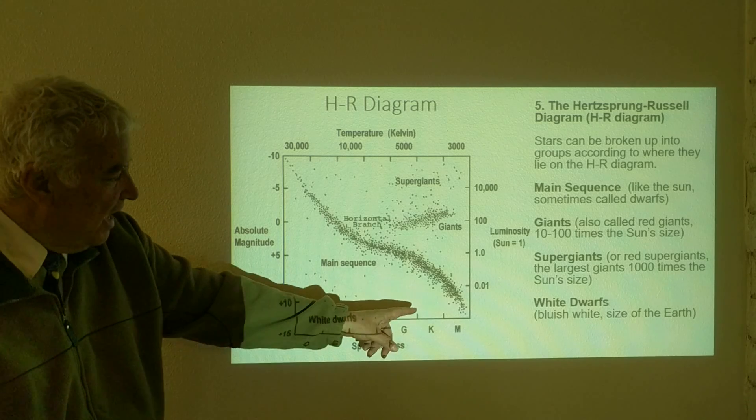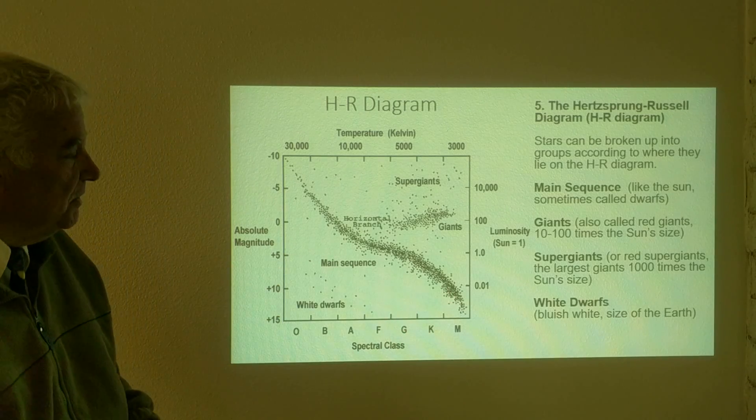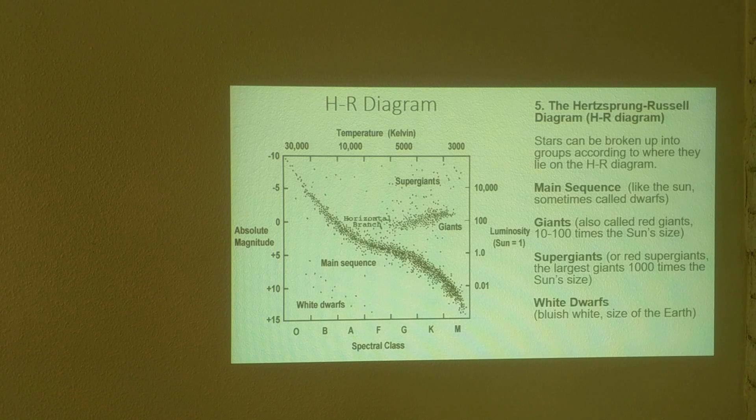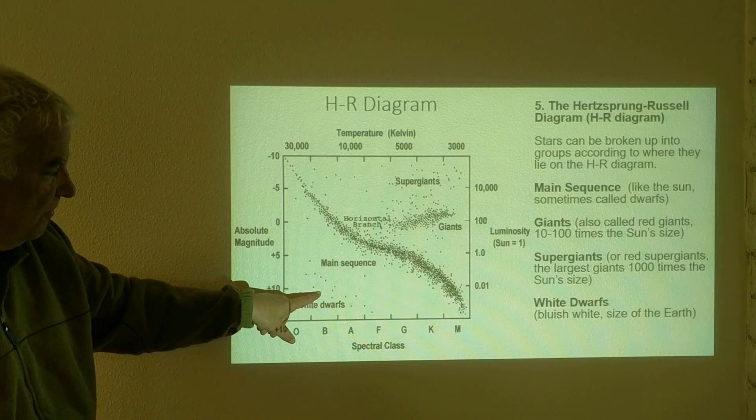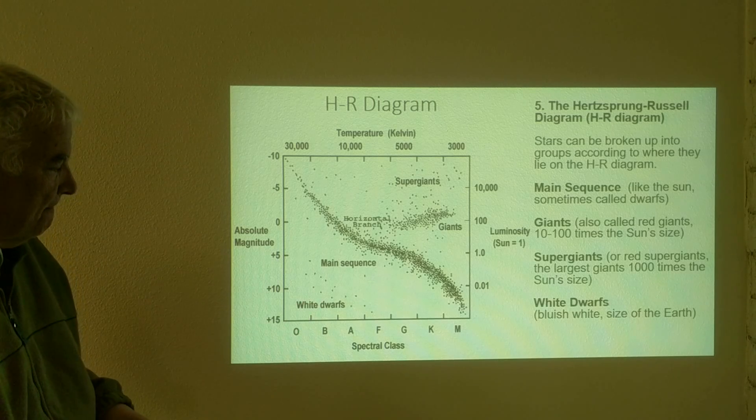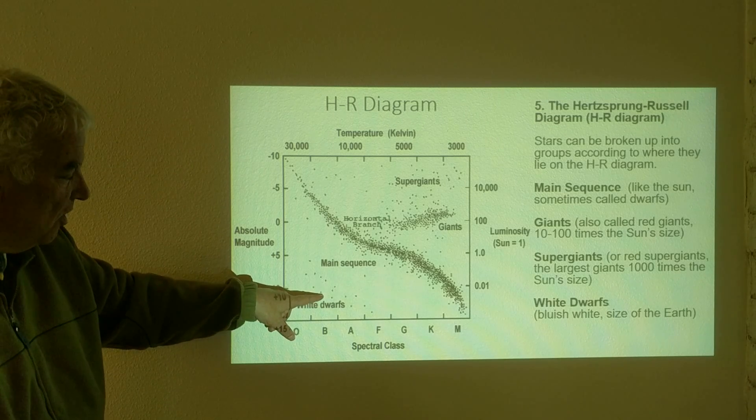So we can explain that as follows. We can see that from the Stefan Boltzmann law, we have the relationship between the size of the star and the amount of light it emits and the temperature. And so an object that is small, like a white dwarf, but hot, could also be not very bright because since it's small,